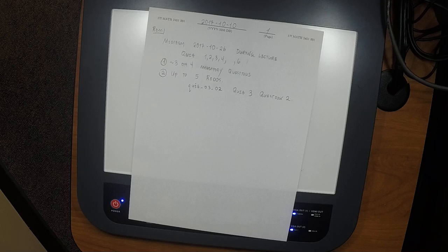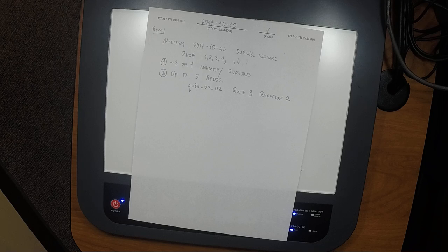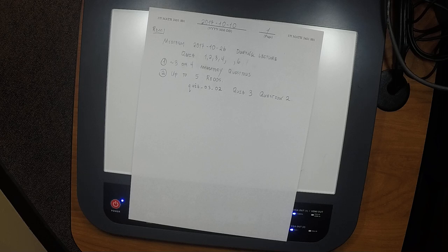If you want to redo none, that's fine, but you can't redo more than five. In a perfect world I would let you redo all of them, but I have a finite amount of labor I can allot to the grading process. So you can redo zero, one, two, three, or five exercises, and you get to keep the better of the two scores.